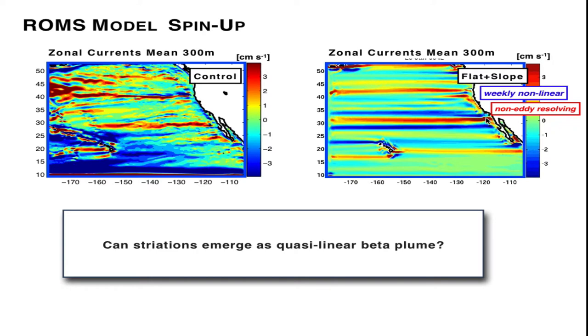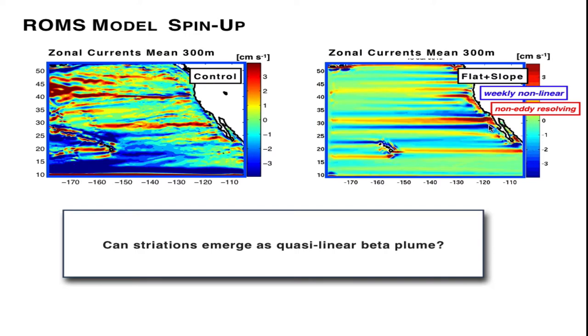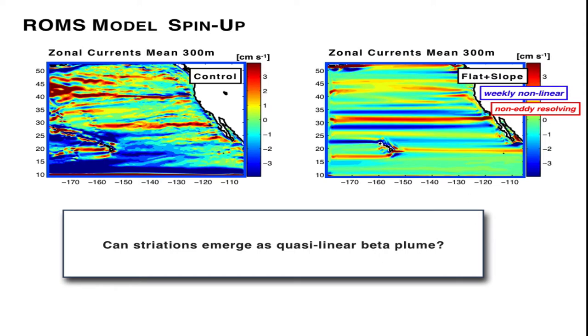This is the simulation. You can see that there is an instability here that goes on and you have slowly the development of striations in a very kind of linear fashion. Over time, these striations fill the interior of the ocean. If you further analyze the dynamics of these, you will find that this development is very much consistent with quasi-linear beta plumes. In some sense then, these striations can develop as quasi-linear beta plumes from the eastern boundary.